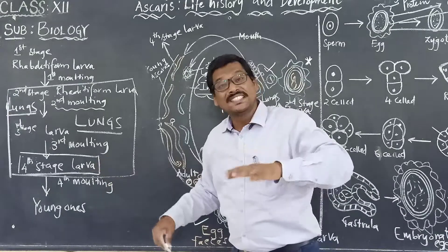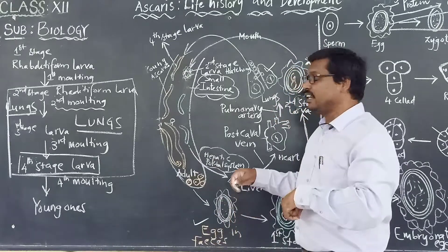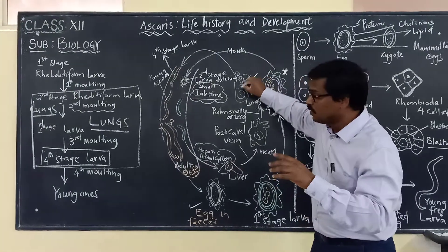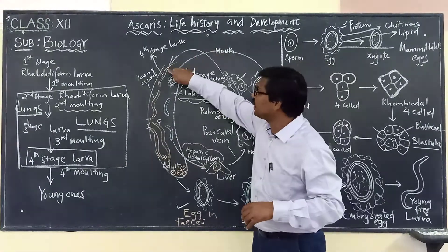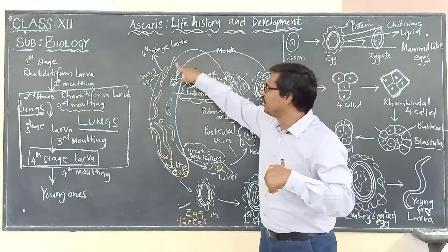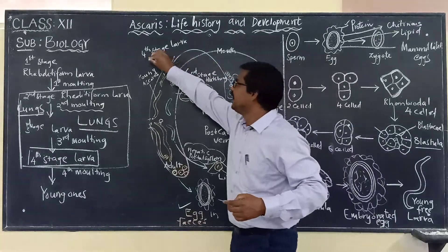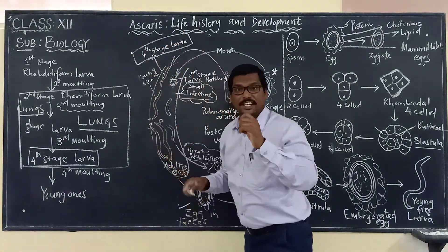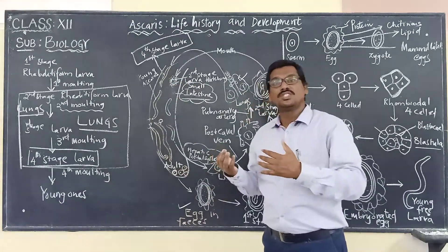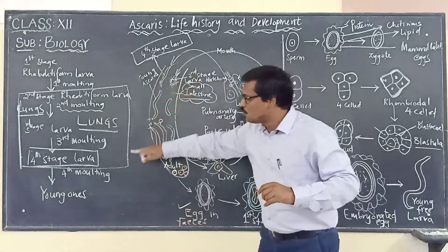The fourth stage larva moves from the lungs back into the mouth and enters the digestive system, returning to the small intestine. Once it enters the intestine, it undergoes the fourth moulting.